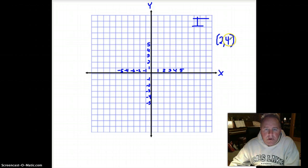The second number tells us that we want to go along the y-axis to four. So I'm going to go along the x-axis to two and up the y-axis to four. And that would be my graphing point right here.